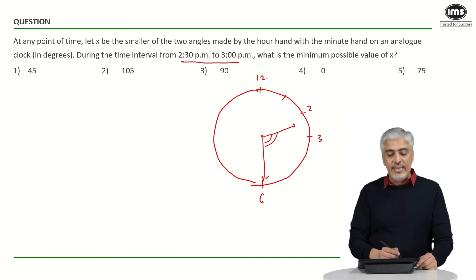As the clock will tick, say if we go to 2:35, the angle will keep increasing. The minute hand keeps going up. This angle will keep becoming more and more.